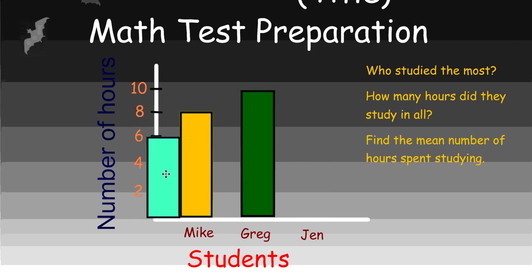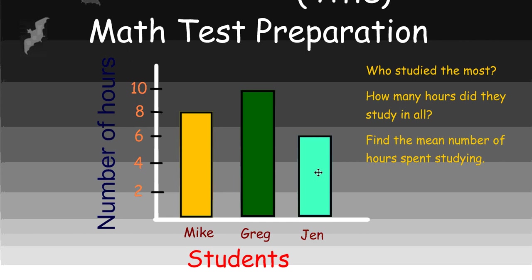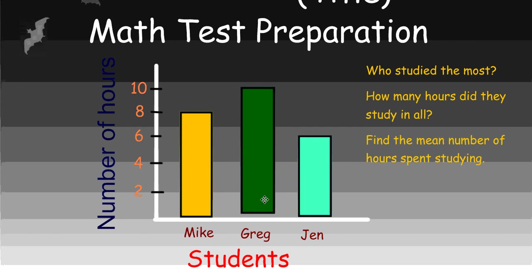Jen, slacking with only six hours, which if this is for an entire week, maybe that's not quite enough. If it's for one day, six hours is a pretty good study time. Find the mean number of hours spent studying. Add the numbers together. Let's assume that Greg is even with 10 hours, and then divide by the number of pieces of data. What'd you come up with? Eight. That is correct. Eight would be the mean number of hours spent studying. I think we've got the basics to a bar graph. Let's move on to some more challenging questions and problems.